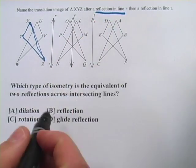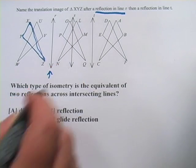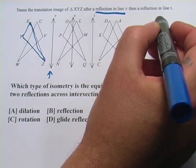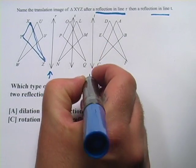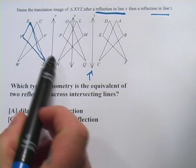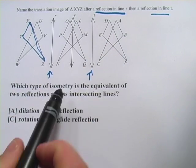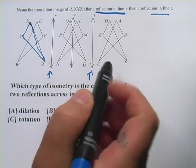After a reflection in line R, so that's this right here, and then a reflection in line T. So that's this one here. So we're going to reflect it over this one. It's going to end up somewhere in here. And then we're going to reflect it over this one, so it's going to end up somewhere in there.